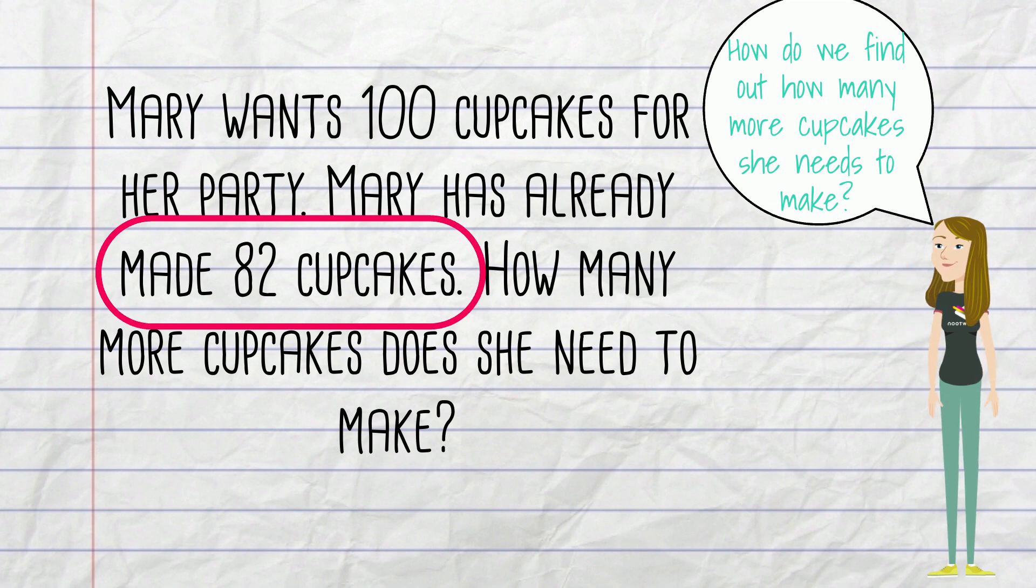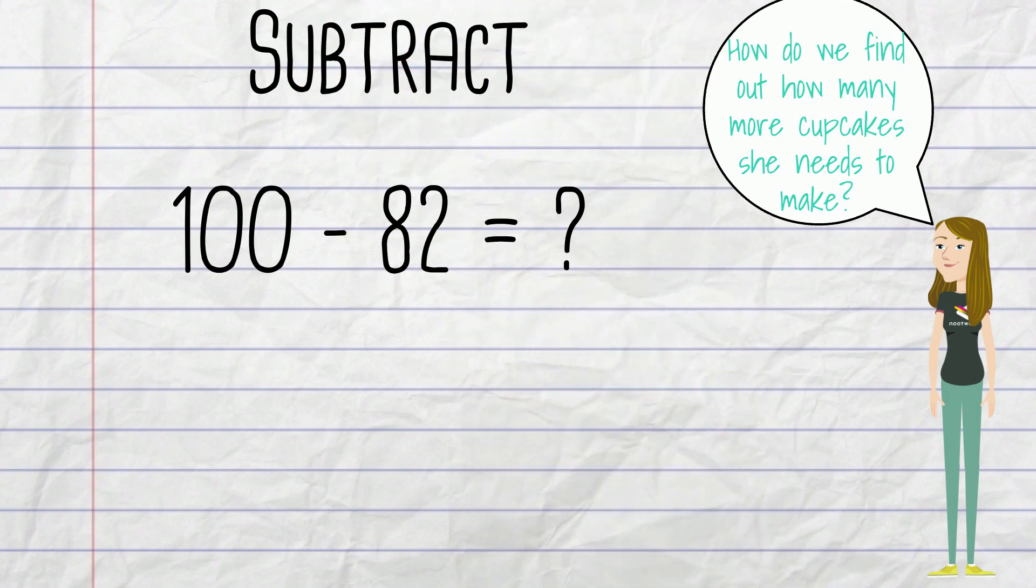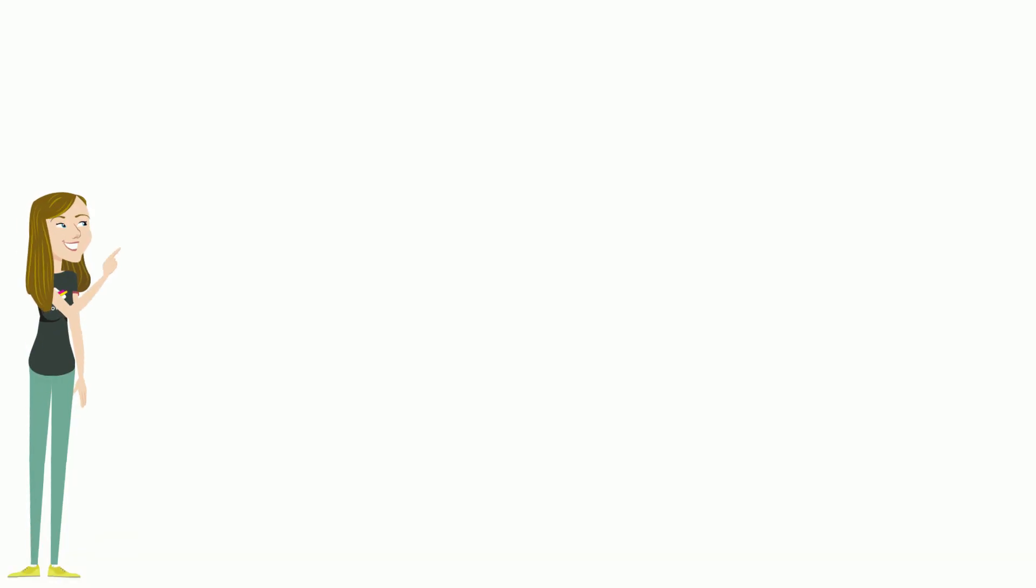Oh, that's right. We need to subtract 82 from 100 to find the difference. Let's solve 100 take away 82. I would like to use a number line. Let's start at 100 and count back.